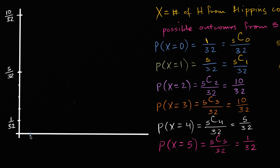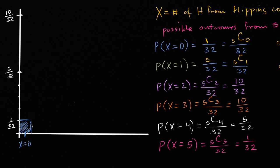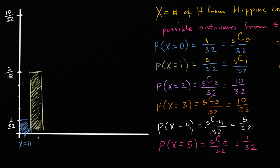Let me make a little histogram here. So x equals zero — the probability there is 1/32, and I can shade that in. Now the probability that x equals one is 5/32. So let me draw that bar up to 5/32 and shade it in. This right over here is the probability that x is equal to one — that exactly one out of the five flips results in heads.